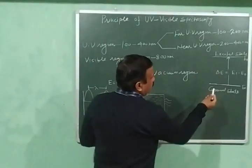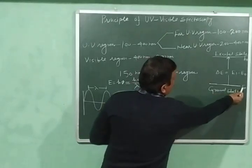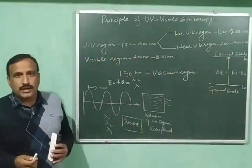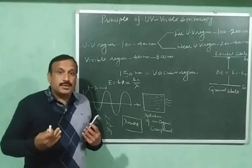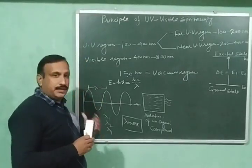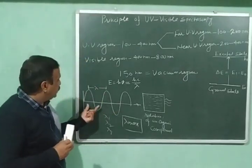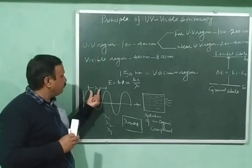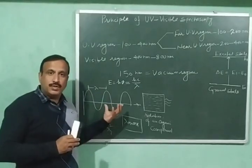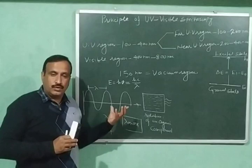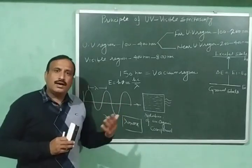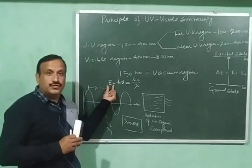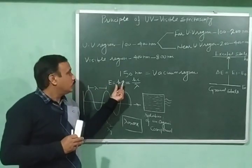Here we have the ground state having energy E0 and the excited state having energy E1. To explain this principle diagrammatically: we have an ultraviolet or visible radiation having wavelength lambda, and this radiation contains a large number of photons. The energy of each photon is equal to hν.